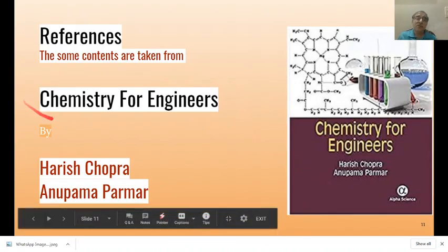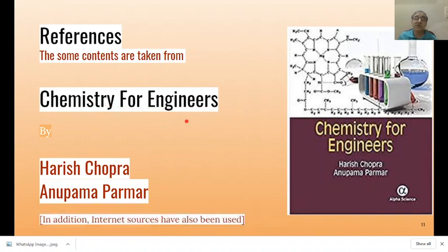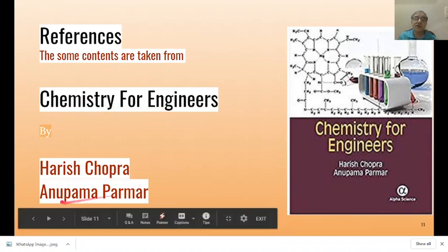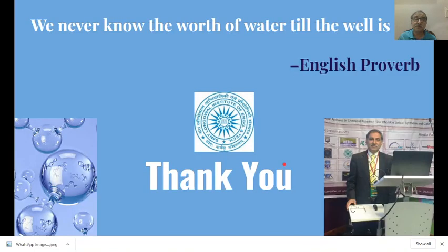The book consulted for preparing this lecture is Chemistry for Engineers by Harish Chopra and Anupama Parmar, published by Alpha Science UK, with the Indian edition published by Narosa, New Delhi. Thank you very much.